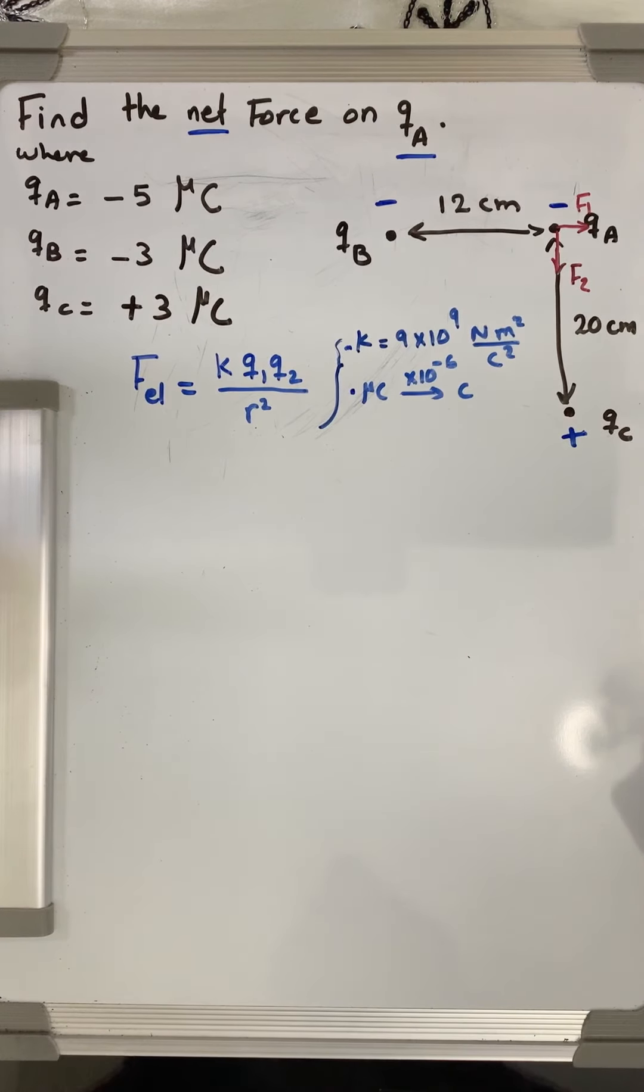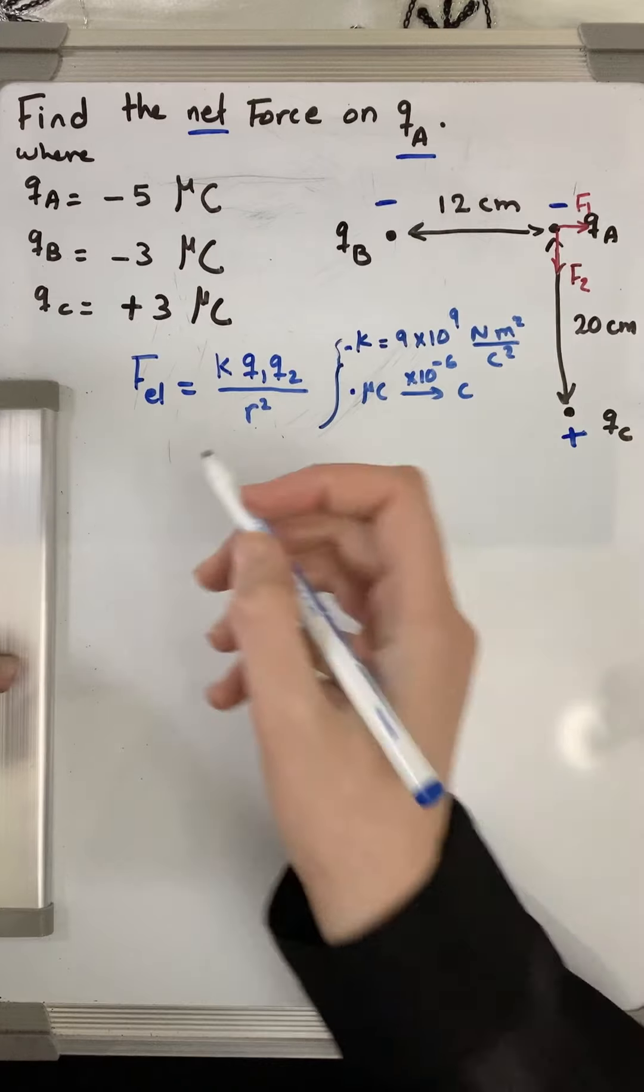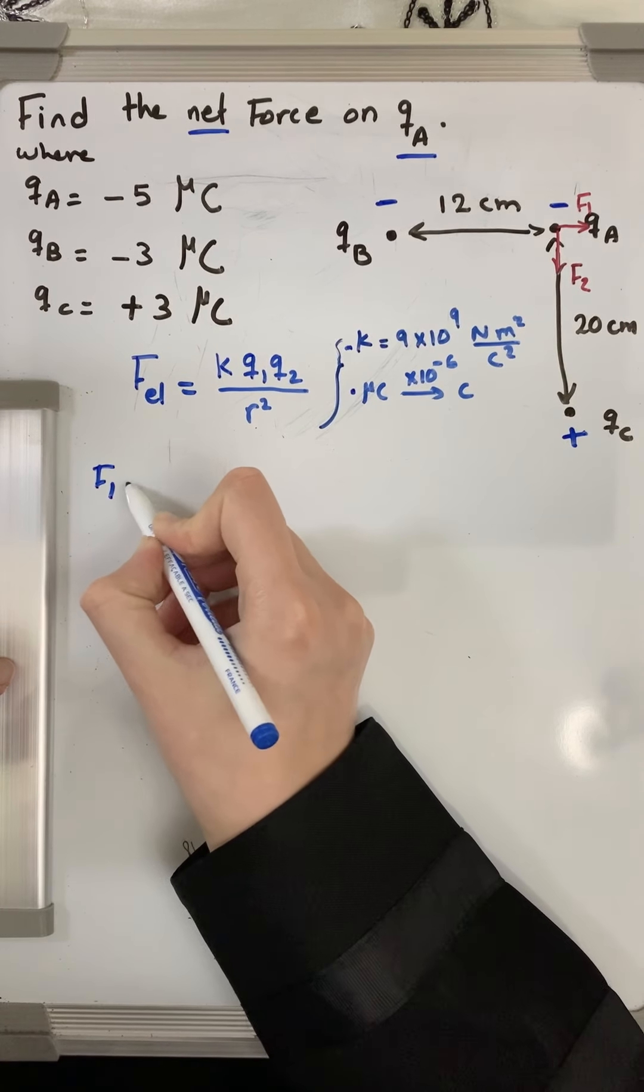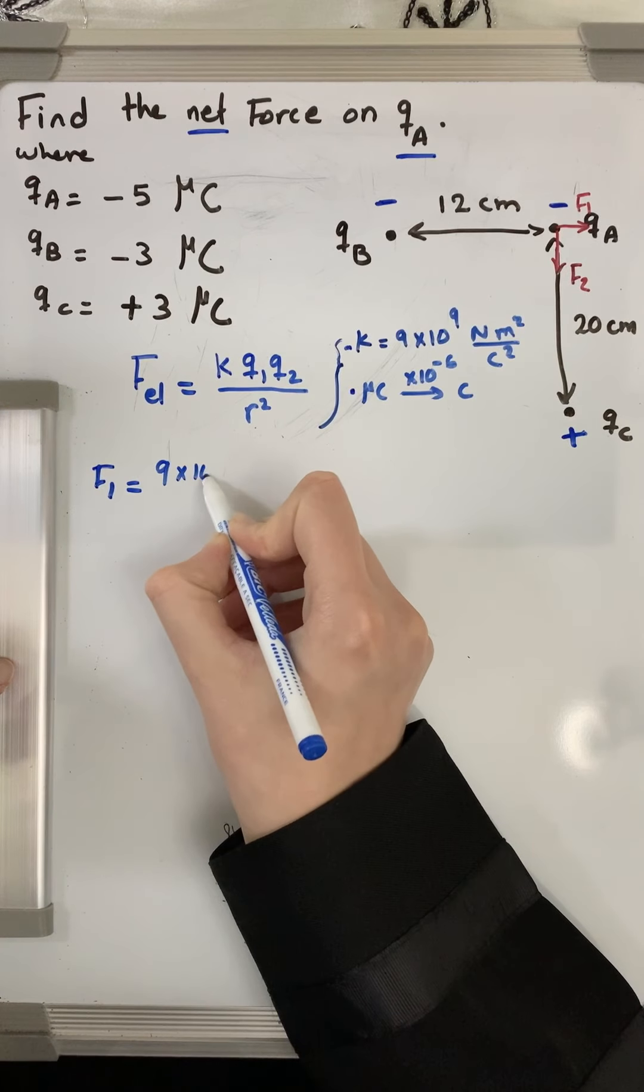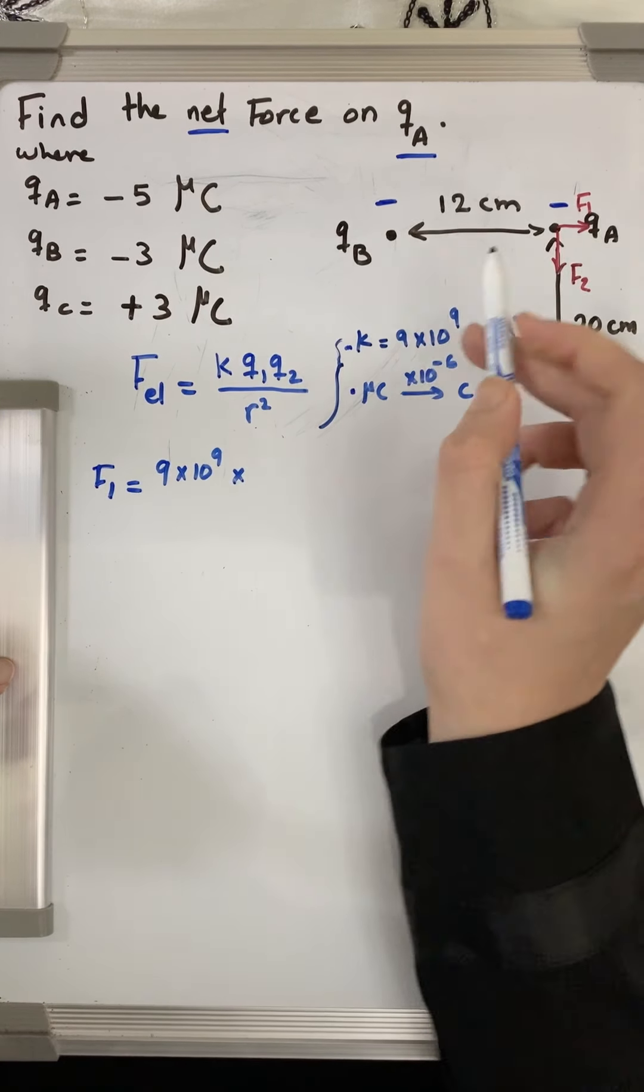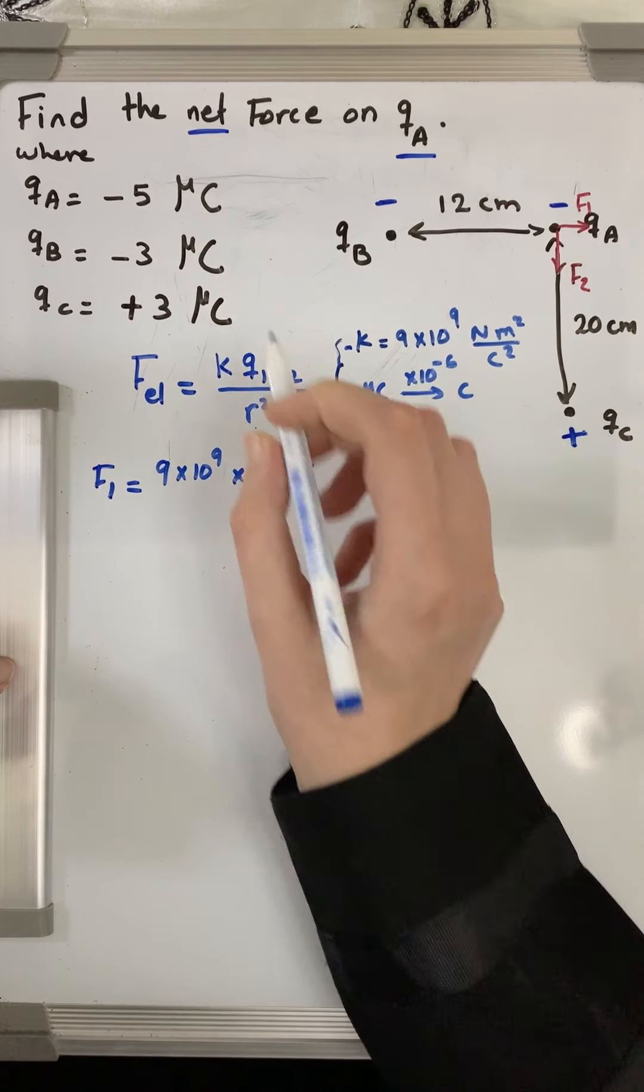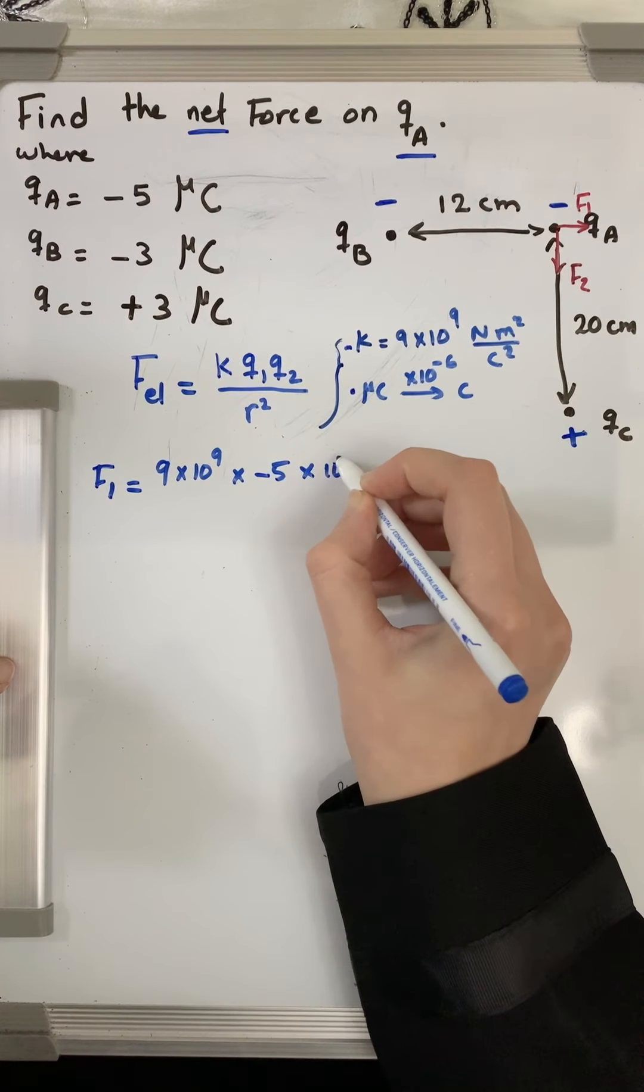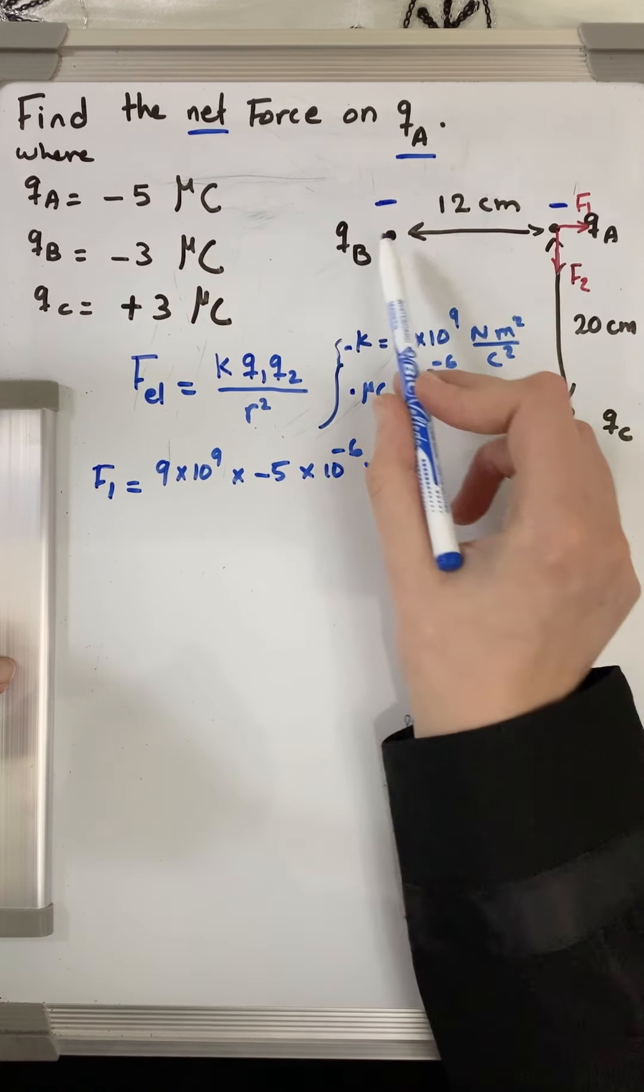So let us start and calculate F1. F1 will be k, which is 9 times 10 to the power of 9, times the two charges we will multiply them. qa is negative 5, again microcoulomb, so I need to multiply by 10 to the power of negative 6 times q2, which is...